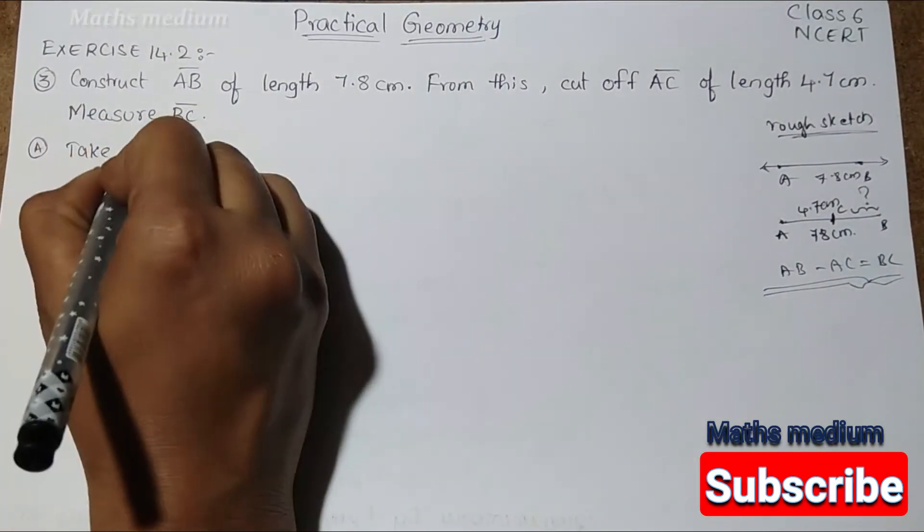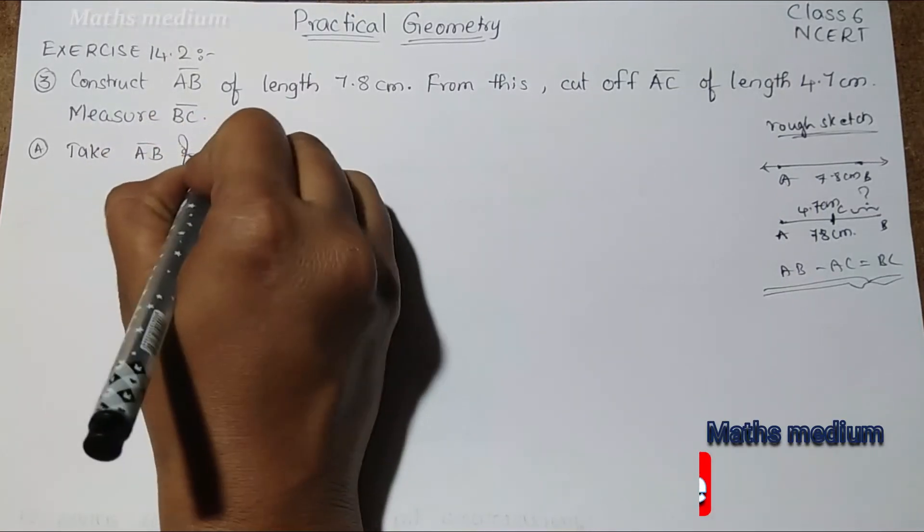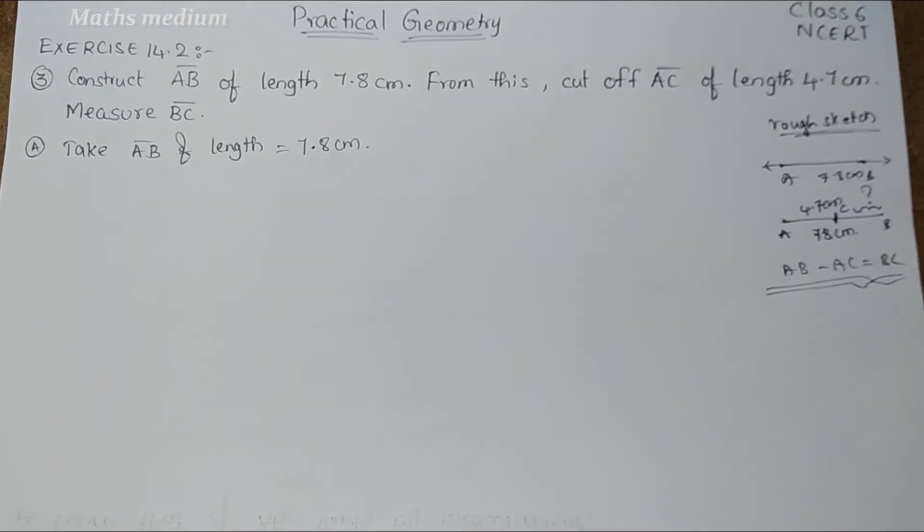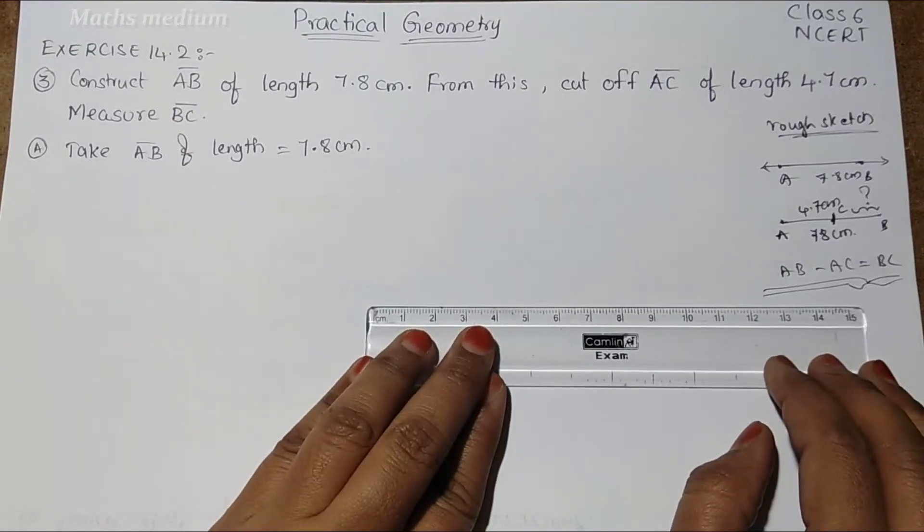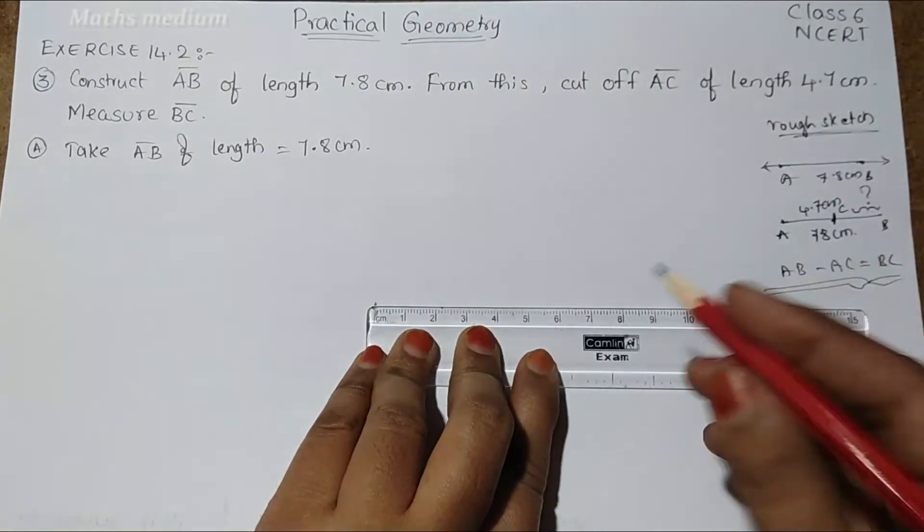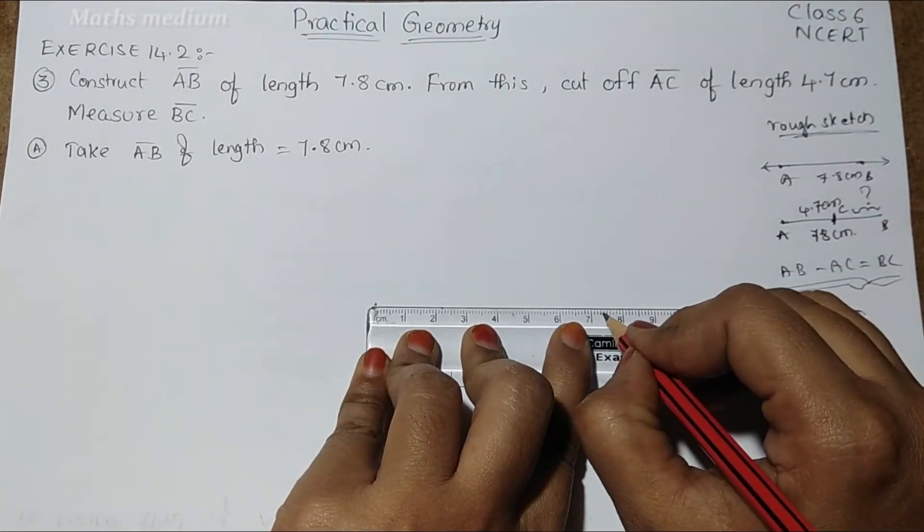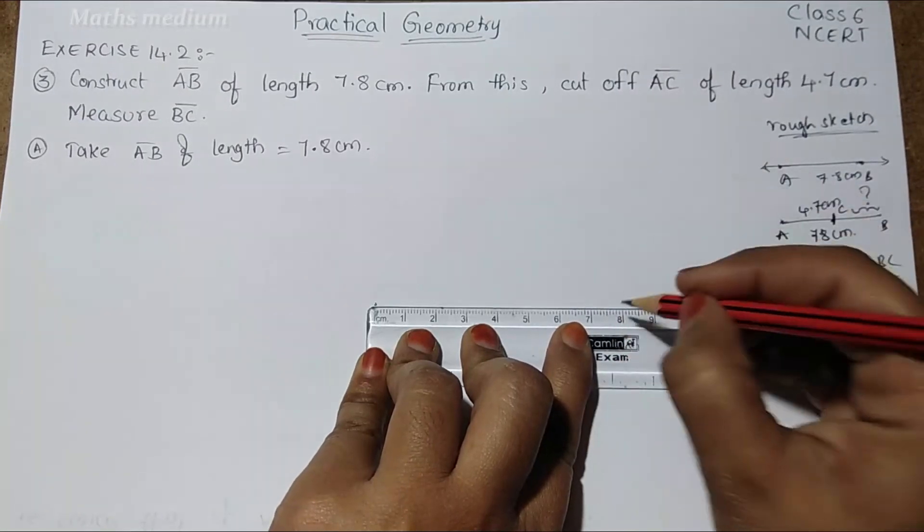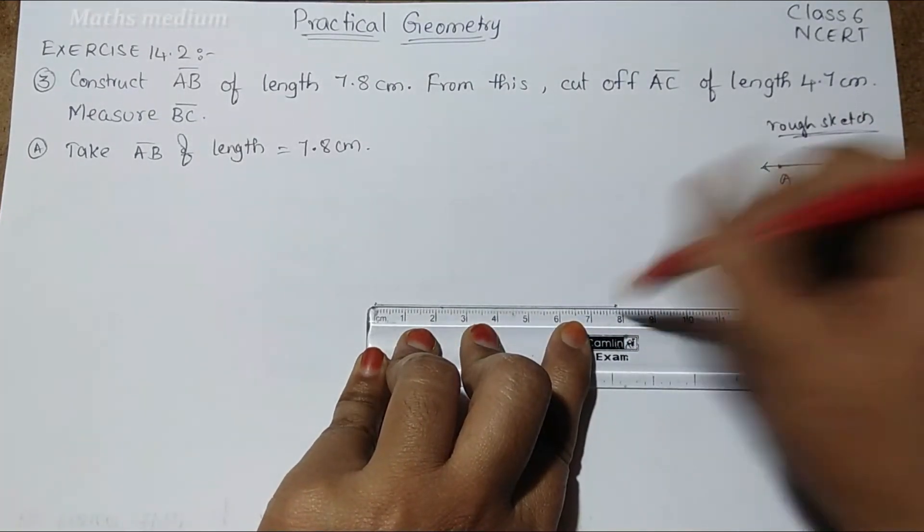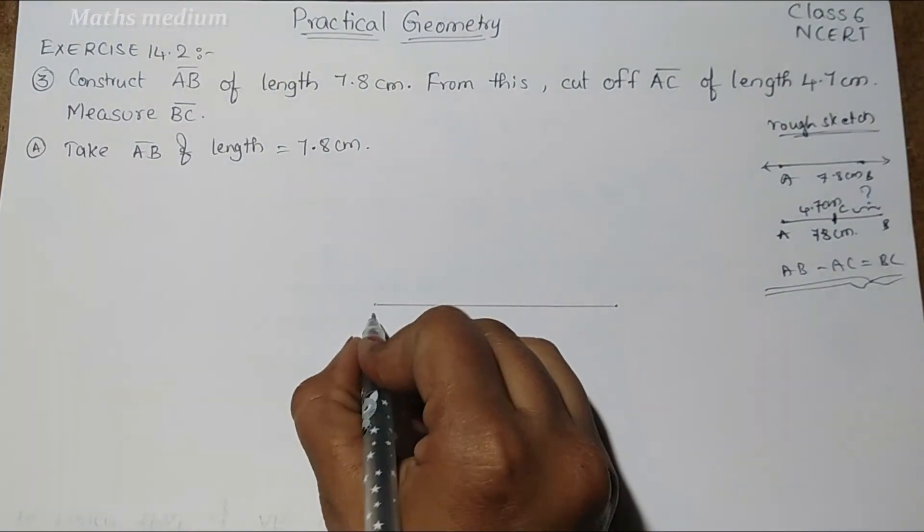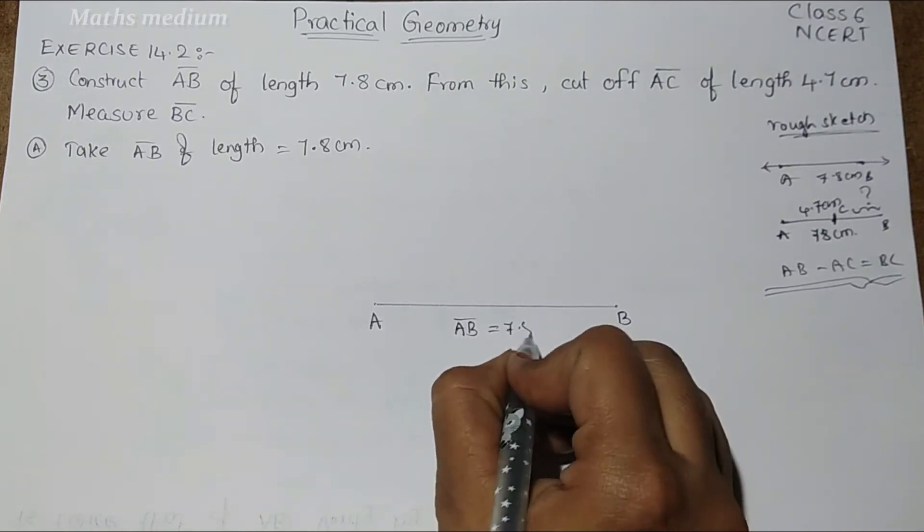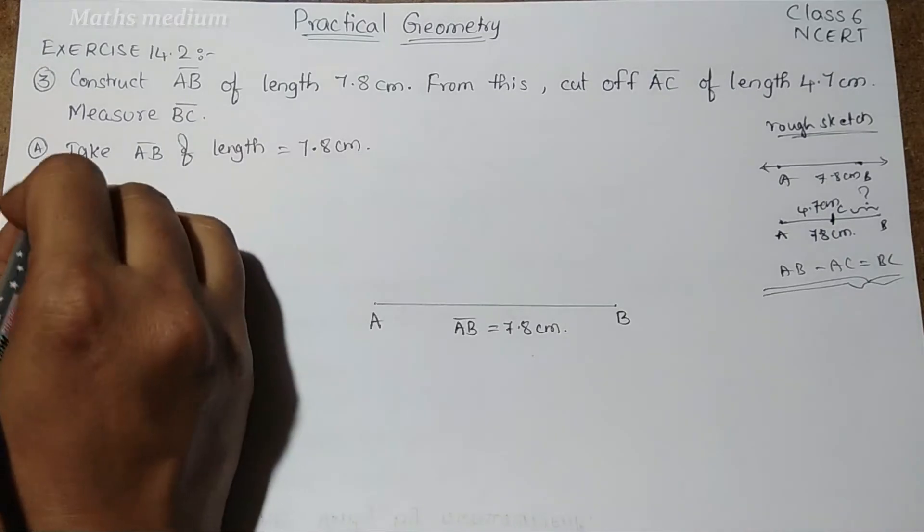Take AB bar of length equal to 7.8 cm. Take the ruler and from 0, 7.1, 7.2, 7.3, 7.4, 7.5, 7.6, 7.7, 7.8. This is 7.8 cm. Draw the line like this. It is A and this is B, AB bar with 7.8 cm.